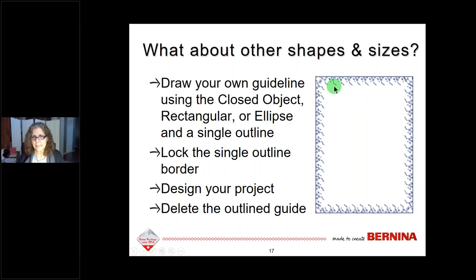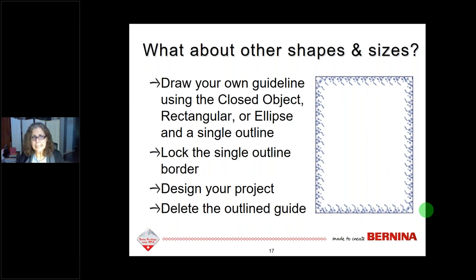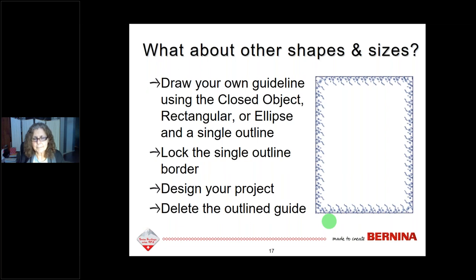For designs larger than 118 inches, you can use digitizing tools in the software — the closed object tool, rectangle tool, ellipse — with a single outline stitch to draw a border guide. You lock that border by right-clicking and selecting the lock option, bring in your design, plan your layout around it, then delete the outline guide when stitching. You'll use basting markers or digitizing marks on the quilt to guide placement.